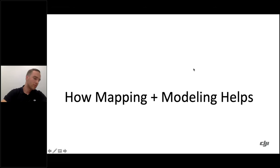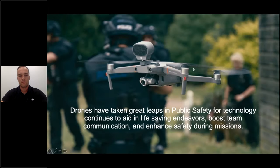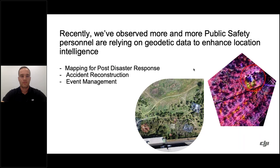How does mapping and modeling help in public safety? Drones have taken great leaps in public safety — they help save lives. In our lives rescue map, we've counted about 730-plus rescues, and it's only the beginning. We've seen more and more public safety personnel relying on GIS data to enhance their location intelligence. Sample use cases include mapping for post-disaster response, accident reconstruction, and event management.